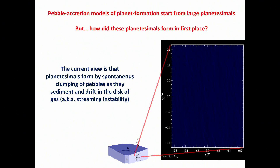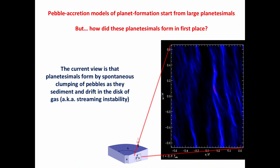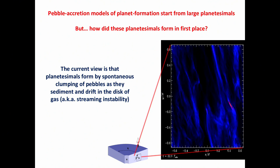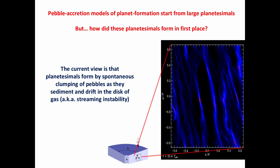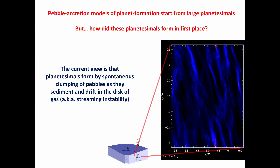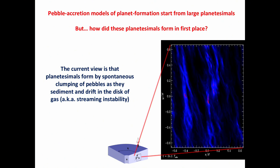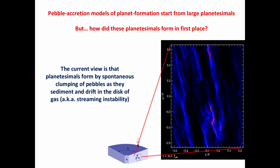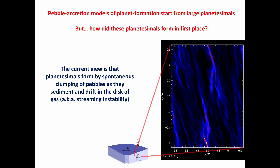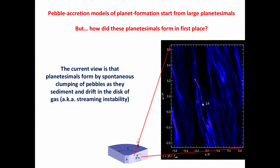The current understanding is that planetesimals form from pebbles, because as pebbles drift in the disk they can spontaneously clump, as we can see in this video showing a projection on the plane of a small portion of the disk. The colors show the density of solids — red means high density, black means low density. Pebbles spontaneously clump in the disk through a process called streaming instability, and from these clumps, hundred-kilometer planetesimals can form.